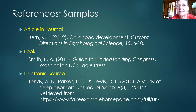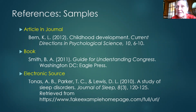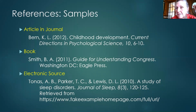Here are some APA reference samples. For a journal article: Burn, K.L. (date). Childhood development. Current Directions in Psychological Science, 10, 6–10. The article name is the chapter within the bigger publication, the journal title is the major publication, 10 is the issue number, and 6–10 is the page range.